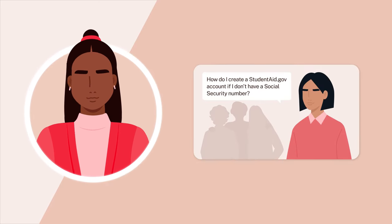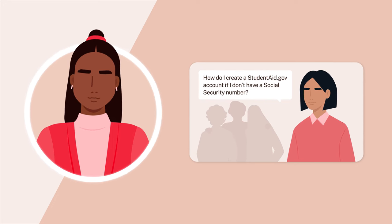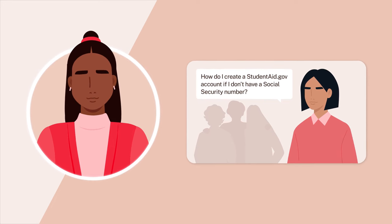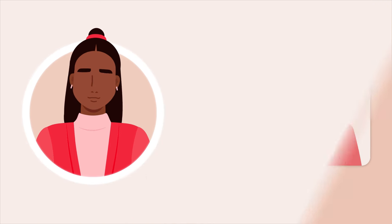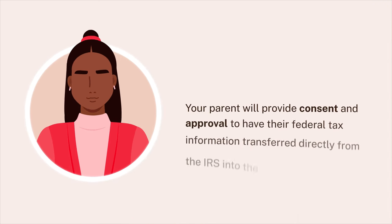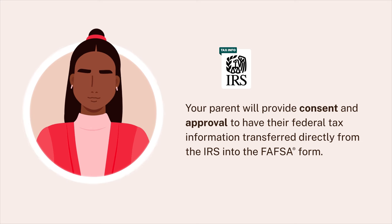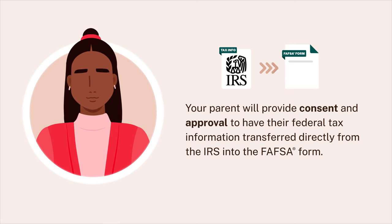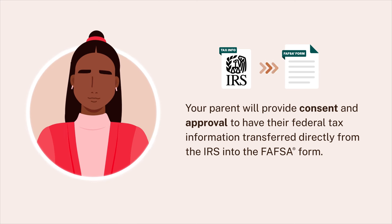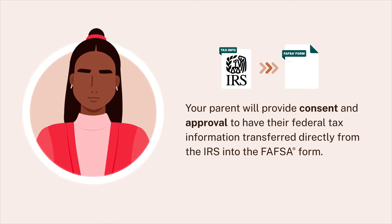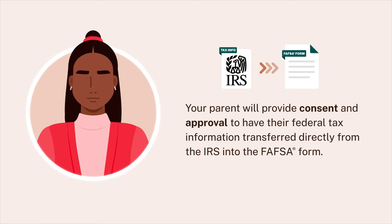Make sure to watch our 'How Do I Create a StudentAid.gov account if I don't have a social security number' video to learn more. After logging in and beginning their required section of the form, your parent will need to provide consent and approval to have their federal tax information transfer directly from the IRS into the FAFSA form.